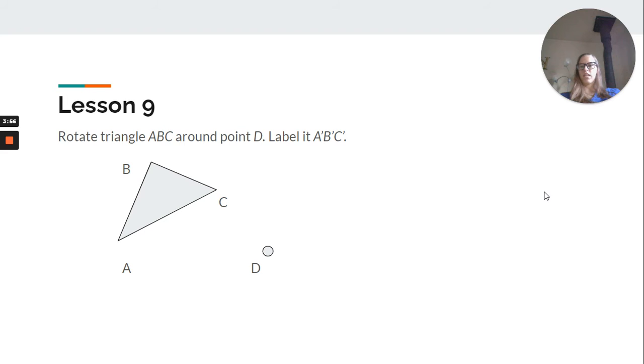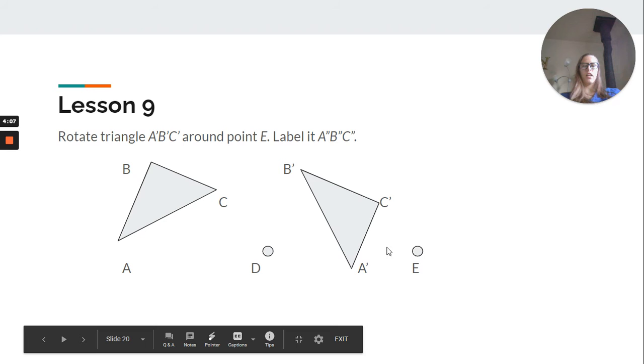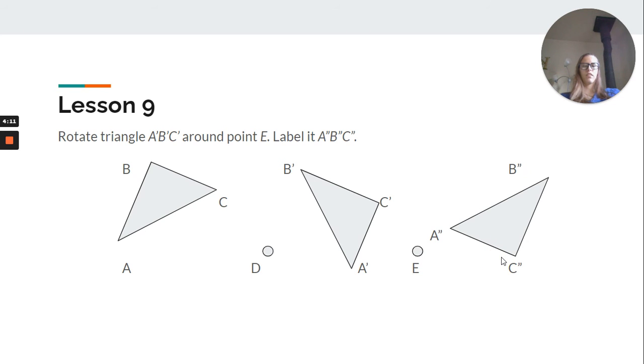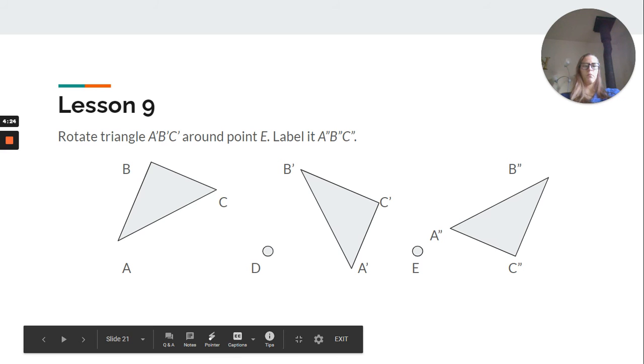And then, yesterday's lesson was 9 and 10. So, we rotate triangle ABC around point D. Label it ABC. And now, it says rotate ABC around point E. So, we do that again. Label ABC with two little slashes. So, we could rotate it back to this one. It would be about 180 degree rotation. About point E and D. But, still the same size. Angles measured the same.